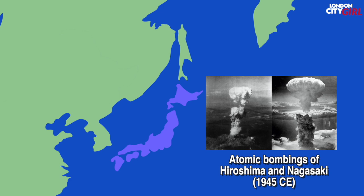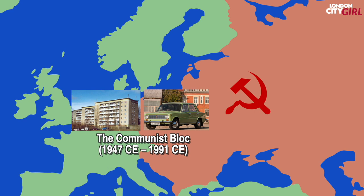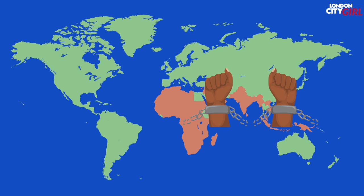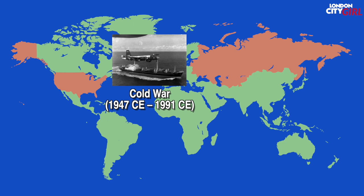After World War Two, the ideology of communism spread across central Europe and communist governments were formed in several countries. After the two world wars, anti-colonialist movements also picked up steam and many countries gained their independence from foreign rule. Between 1947 CE and 1991 CE the Cold War saw a state of geopolitical tension exist between the two world superpowers at the time, the Soviet Union and the US.